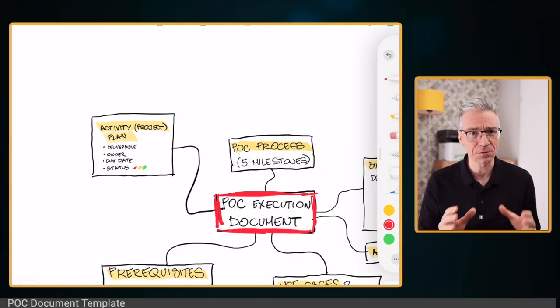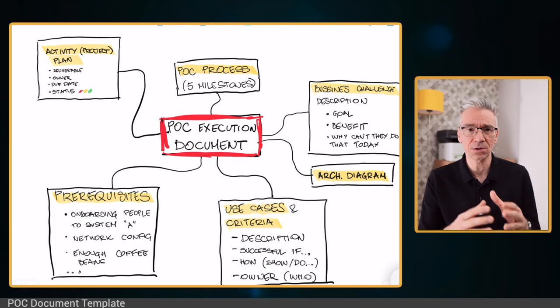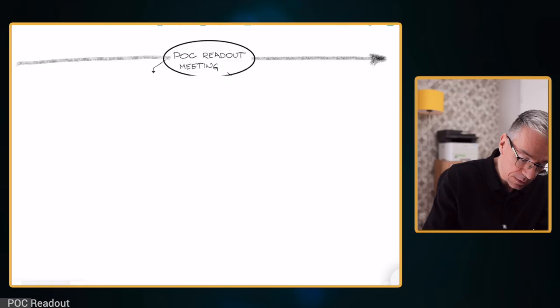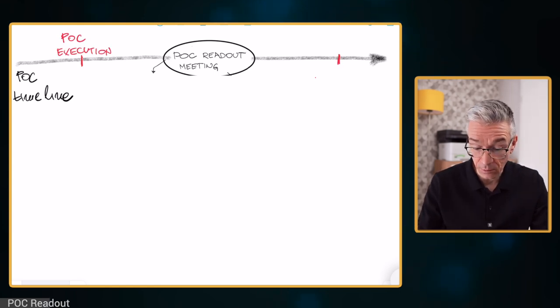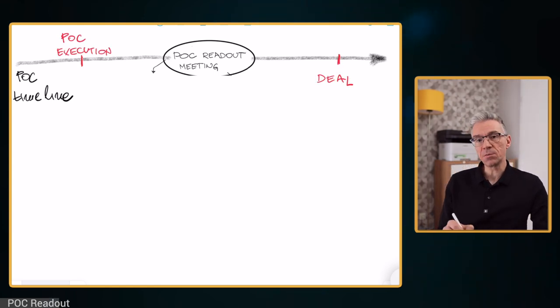Now that we've talked about the five milestones of the POC process and structured the POC document, let's talk about that last step — the POC readout document. Why is the POC readout even important? If this is the POC timeline, we have the POC execution, and what we're striving for is the deal. The POC readout meeting is the first meeting after execution where we get the chance to talk to the economic buyer and all involved stakeholders about how the POC went — to present the results. That's called the POC readout meeting.